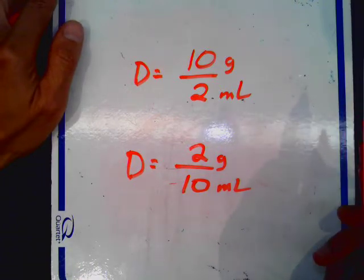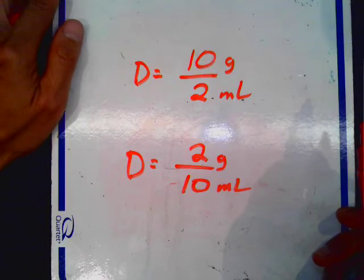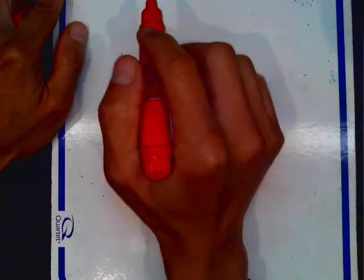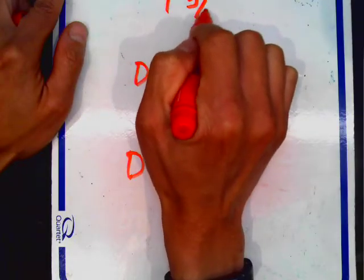An object whose mass is greater than its volume will sink in regular water. Remember, water has a density of 1 gram per milliliter.